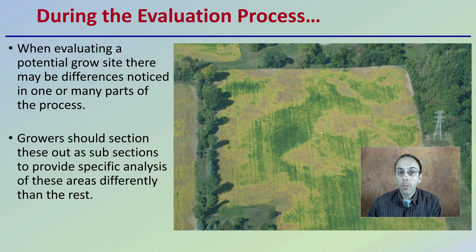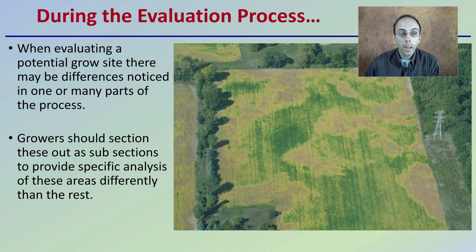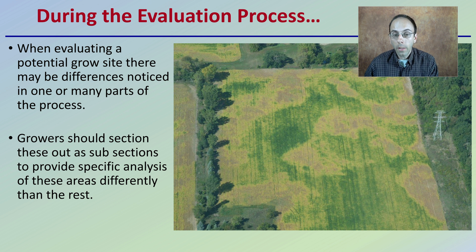First off, during the evaluation process is when you should have an idea of where you might want to have different sections. When evaluating a potential growth site, there may be differences noticed in one or many parts of the process. Growers should section these out into subsections to provide specific analysis of these areas differently than the rest.